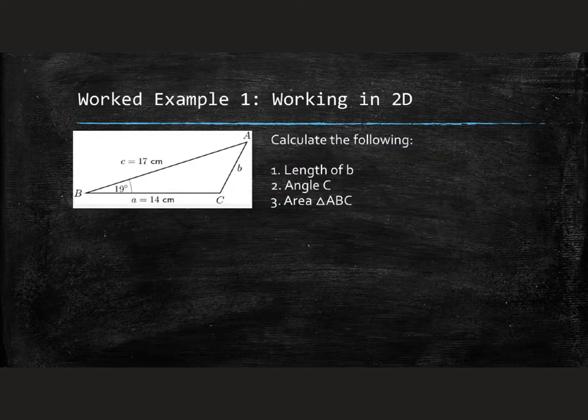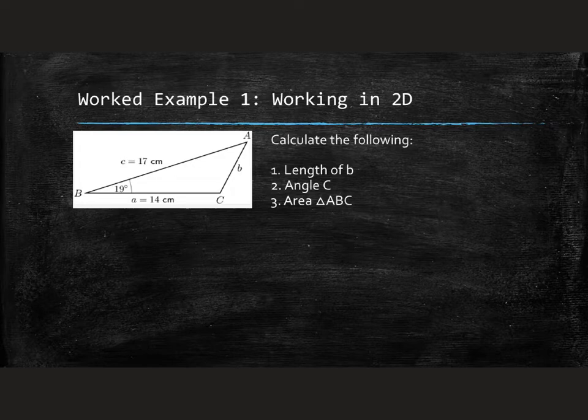Our first worked example: given a triangle where side A is 14, angle B is 19 degrees, and side C is 17. There are three parts — work out the length of side B, find angle C, and determine the area of triangle ABC. Pause this video and give those three a try yourself.